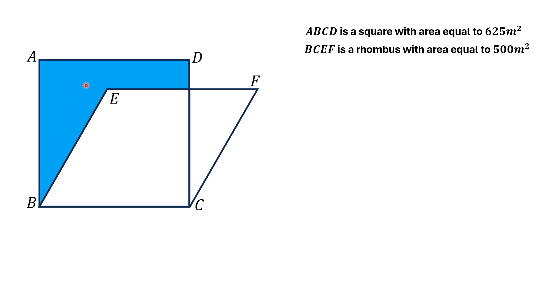So let's move towards the solution. First of all, since the area of the square is 625 meter square, so its side length is 25 meters.